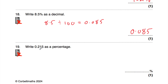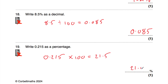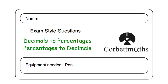Finally, write 0.215 as a percentage. Take 0.215 and times it by 100, moving the digits two columns to the left. The 2 in the tenths moves into the units and then into the tens. The 1 in the hundredths moves into the tenths and then into the units. The 5 in the thousandths moves into the hundredths and then into the tenths. So the answer is 21.5%. That's it — in this video we've looked at how to answer practice questions on converting between decimals and percentages. Please like and subscribe to the YouTube channel.